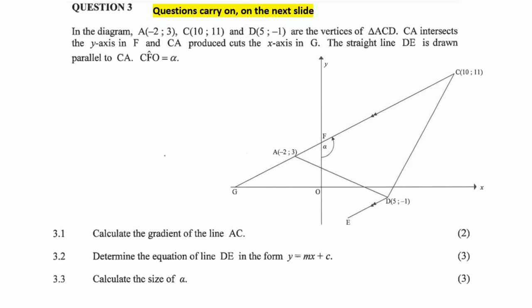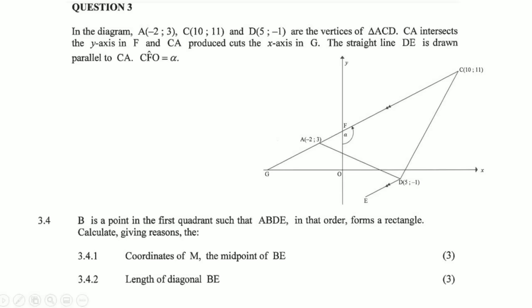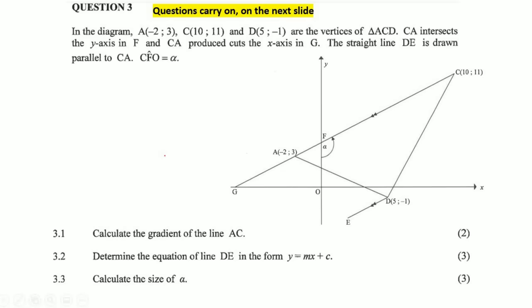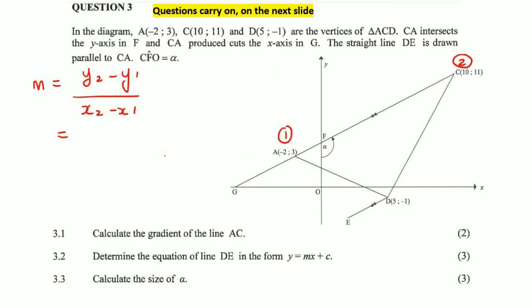Moving on to the coordinate geometry questions. Calculate the gradient of line AC. Using the gradient formula m = (y₂ − y₁)/(x₂ − x₁), with A as point 1 and C as point 2, we get (11 − 3)/(10 − (−2)) = 8/12 = 2/3.